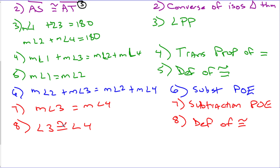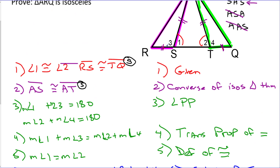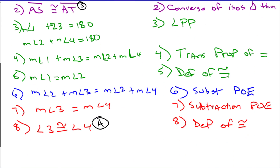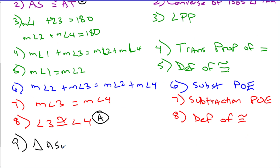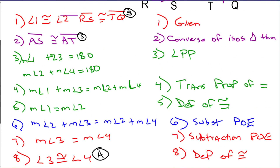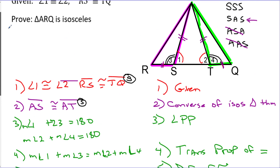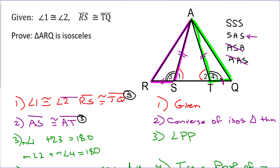In the same way that I turned 'angle 1 is congruent to angle 2' into a measure-equals statement, I can now turn 'measure of angle 3 equals measure of angle 4' back into 'angle 3 is congruent to angle 4' using the definition of congruent. This is a key angle pair in those highlighted triangles. I'm going to mark them with a double arc on the diagram. Step 9: triangle ASR is congruent to triangle ATQ by side-angle-side, which we just spent all of these previous steps proving.